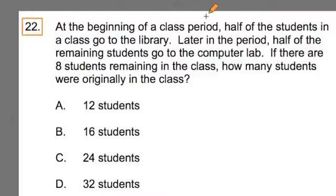At the beginning of a classroom period, half of the students in the class go to the library. Later in the period, half of the remaining students go to the computer lab. If there are eight students remaining in the class, how many students were originally in the class?